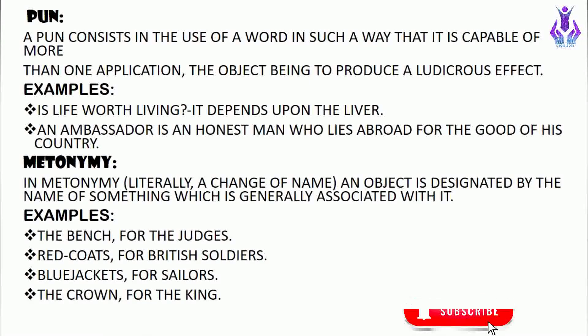The next one is metonymy. In metonymy, an object is designated by the name of something generally associated with it — rather than using a name, we use an attribute. Examples: 'The bench' is used for judges, 'red coats' for British soldiers, 'blue jackets' for sailors, 'the crown' for the king. Also: 'The pen is mightier than the sword.' These kinds of expressions are called metonymy.